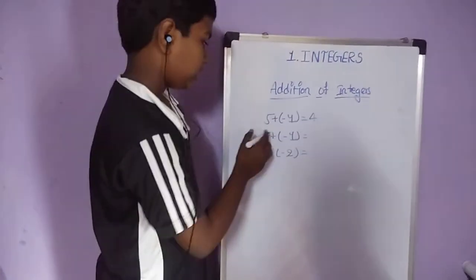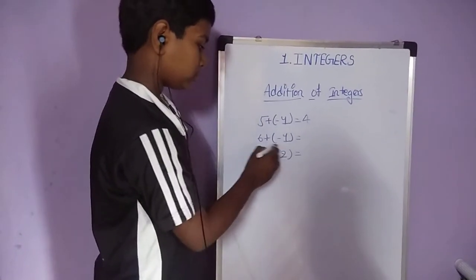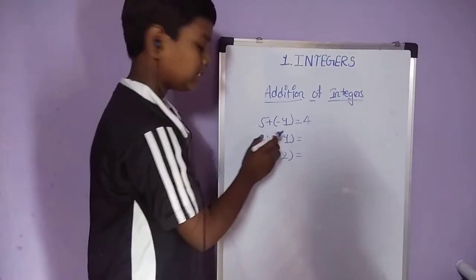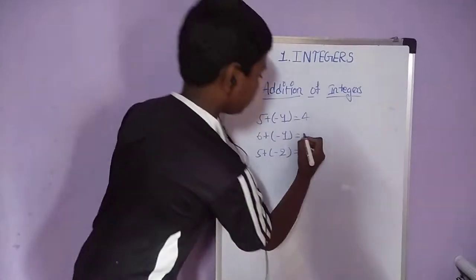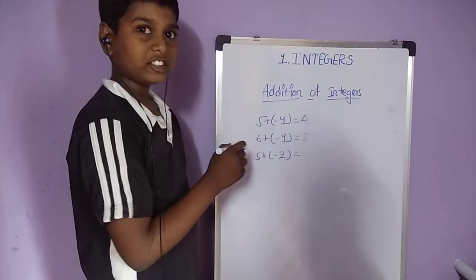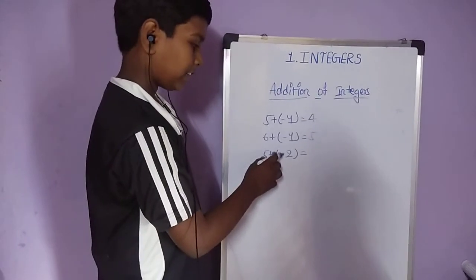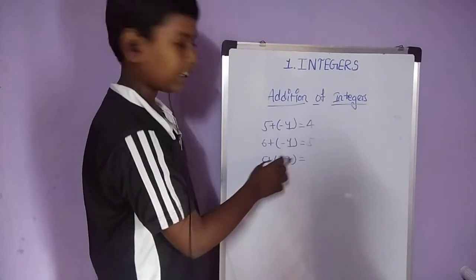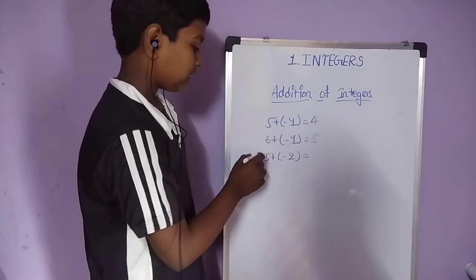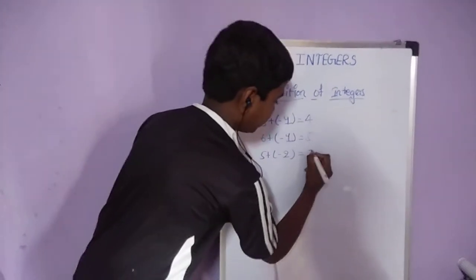Another example: 6 plus bracket minus 1 close bracket. Plus into minus is equal to minus, so 6 minus 1 is equal to 5. Another example: 5 plus bracket minus 2 close bracket. Plus into minus is equal to minus, so 5 minus 2 is equal to 3.